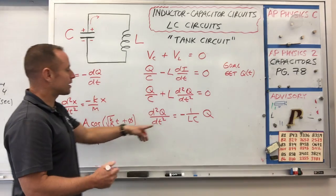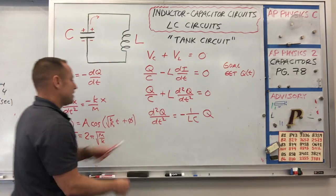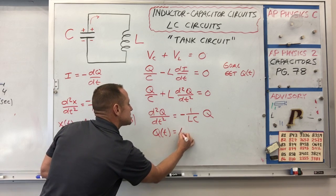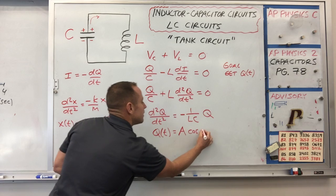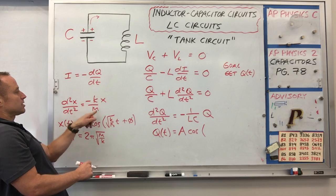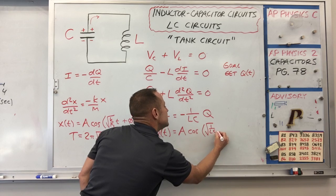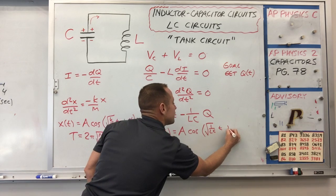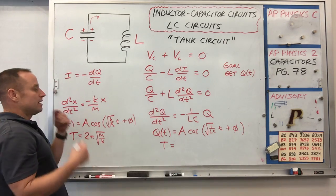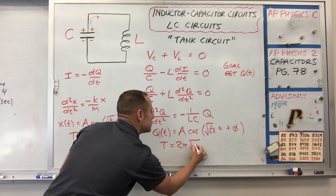We can cheat off that work to get how this LC circuit is going to behave — the charge is just going to oscillate too. Q of t is going to be some amplitude times cosine of √(1/LC) times t plus a phase. The period is going to be two pi times the square root of LC.